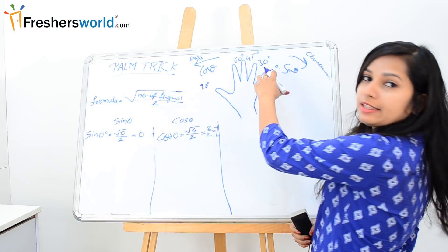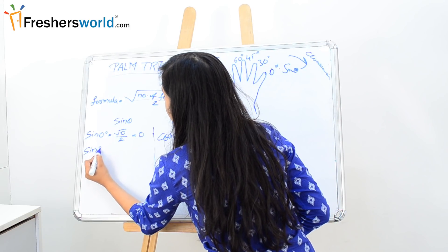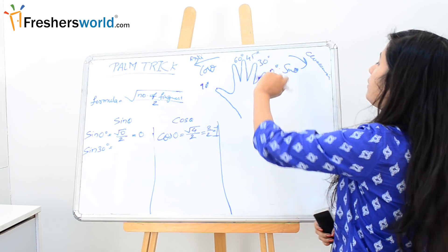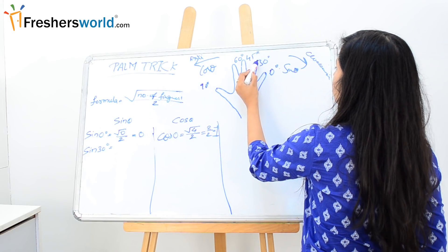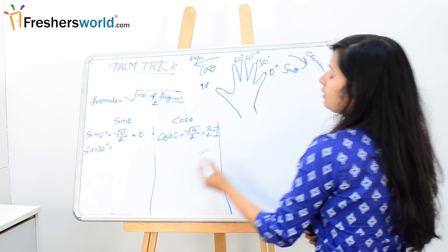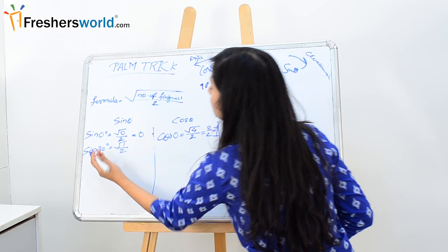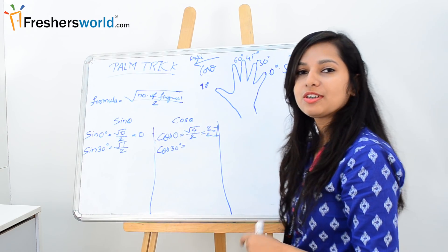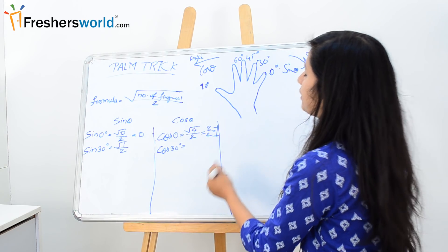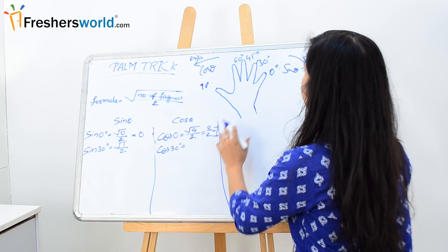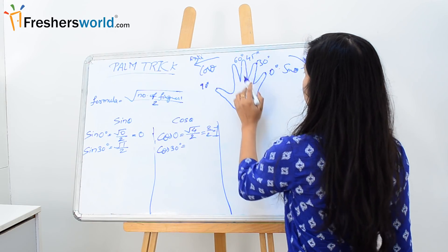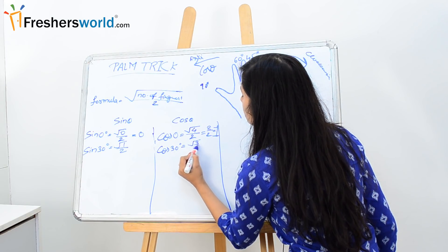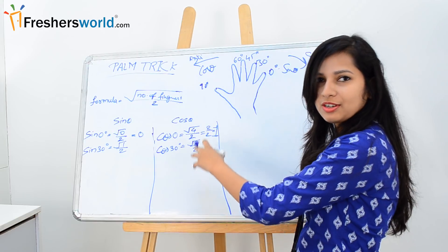Let's find out the value of sin 30 degree. For sin 30 we will be moving clockwise. The number of fingers from here is just 1, that means root over of 1 by 2. So the value of sin 30 is root over of 1 by 2. Similarly for cos 30, we will be moving anti-clockwise. The number of fingers left over anti-clockwise will be 1, 2 and 3, means root over of 3 by 2. This is the value of cos 30 degree.